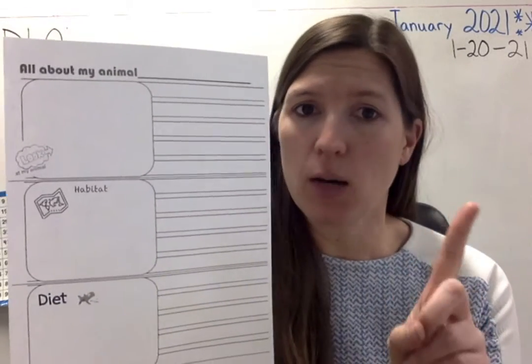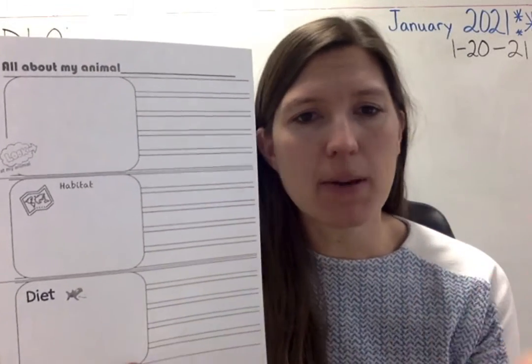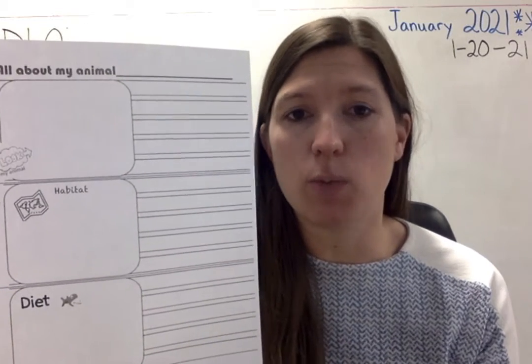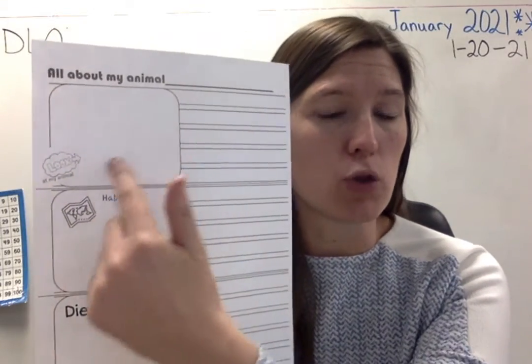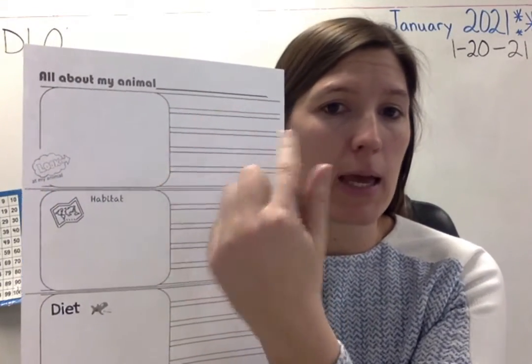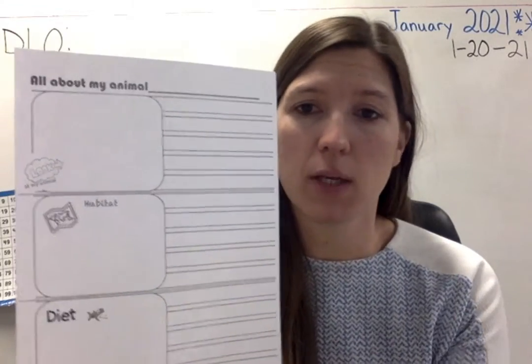First you need to pick an animal. Think about the different animals that you've learned about while listening to Miss Young's videos and my videos. You're going to pick one animal, you'll draw a picture, and you'll write a sentence. My animal is a... whatever it is.